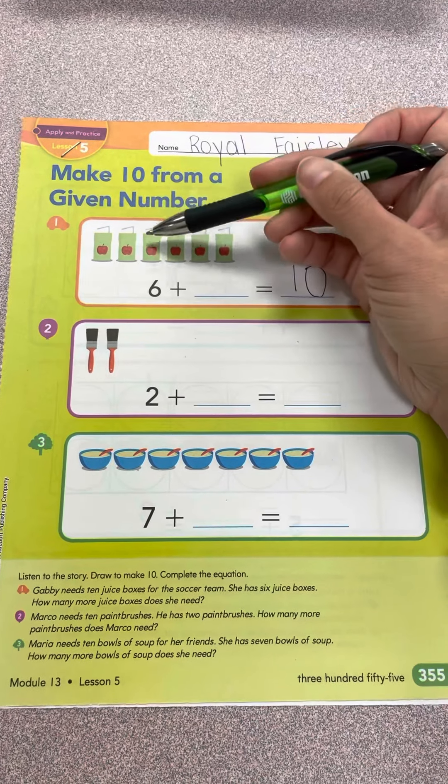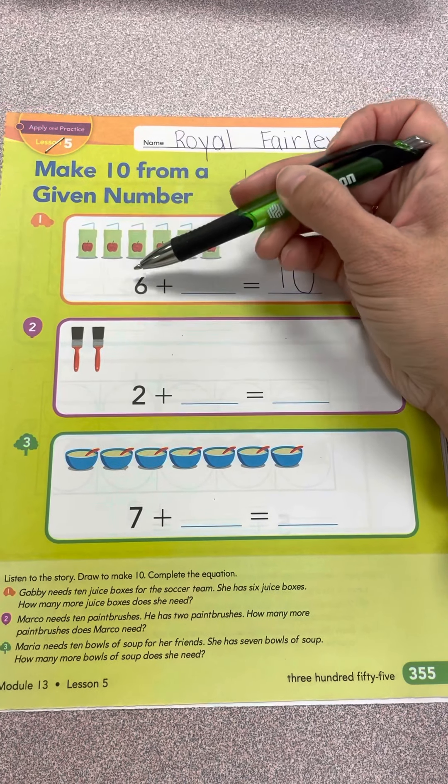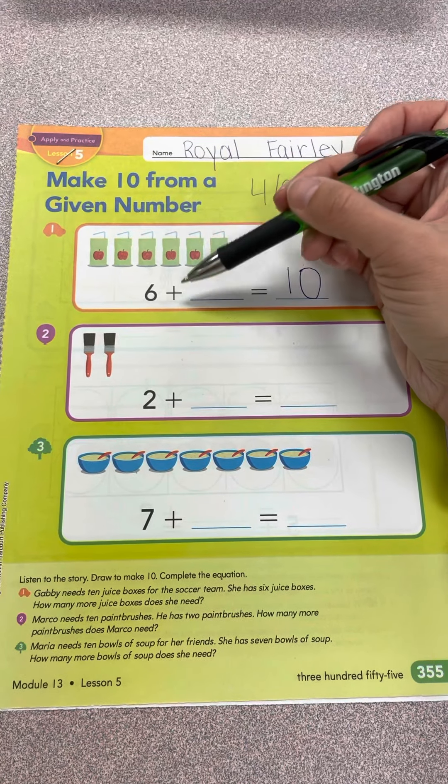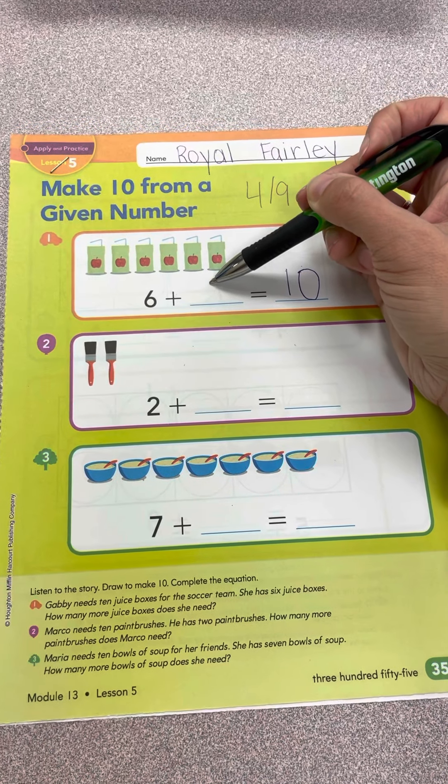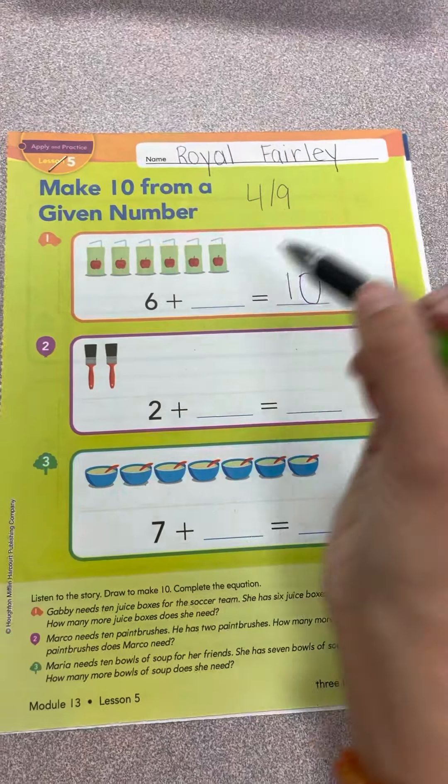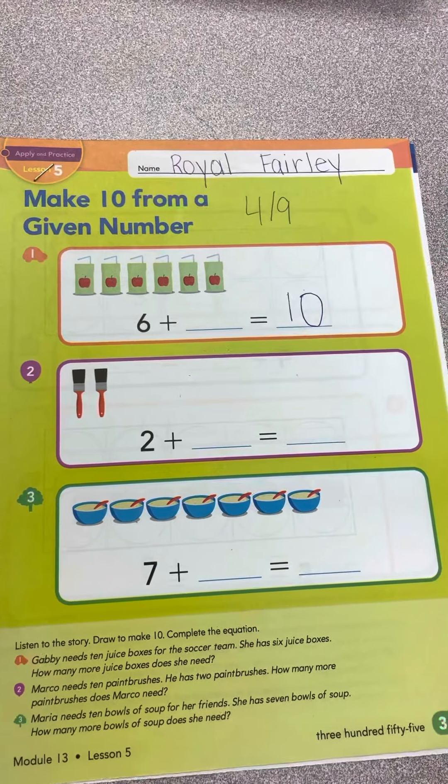She has six juice boxes: 1, 2, 3, 4, 5, 6. There's the six already. How many more does she need? How many more juice boxes? So let's count to six and then keep going all the way to 10.